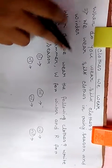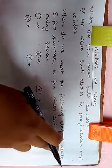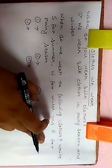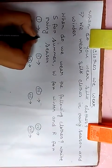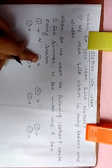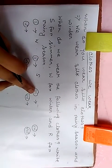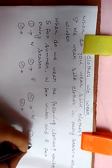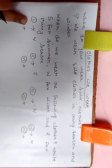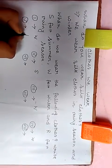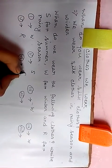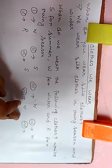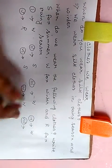Now I'll write down the answers on the board. Number 1: W. Number 2: S. Number 3: W. Number 4: W. Number 5: gumboot — rainy season, R. Number 6: summer clothes, S. Number 7: W. Number 8: summer clothes, S.